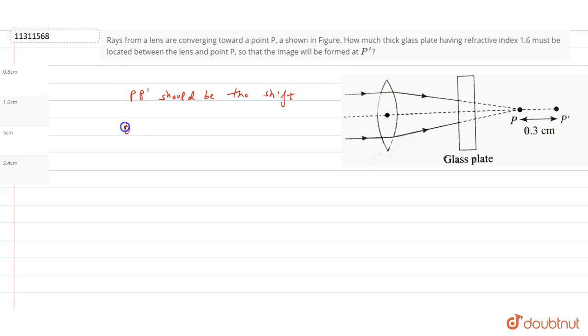The shift is 0.3 cm. This shift is calculated using the formula: shift = (1 - 1/μ) × T, where this is the shift produced due to the glass slab.